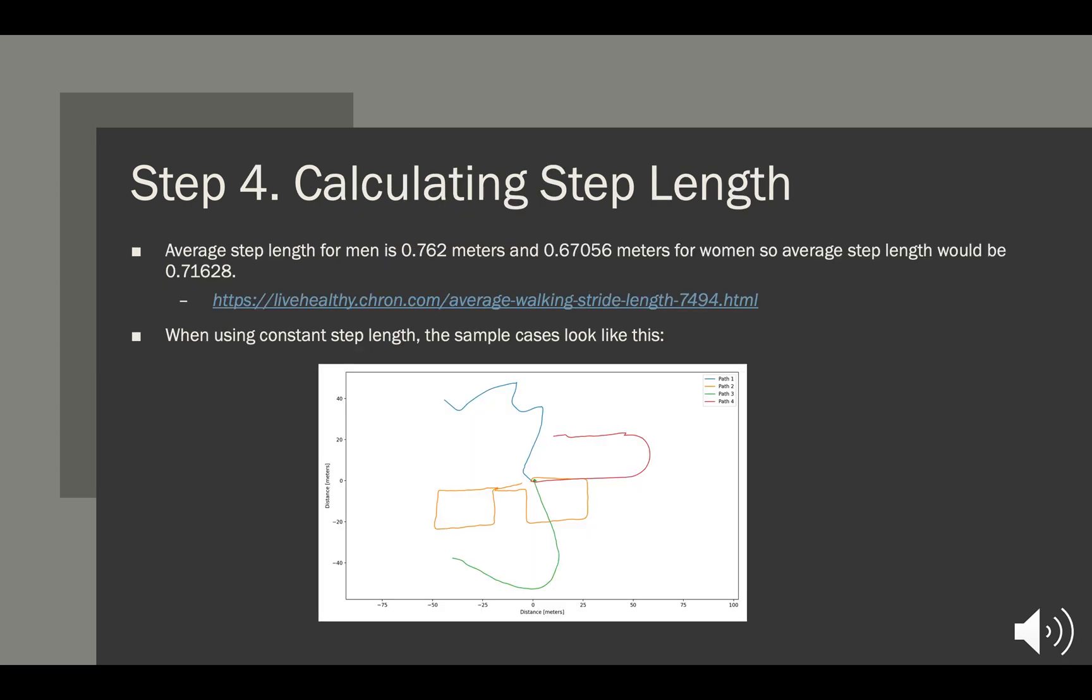The last step is calculating a step length. I tried a few different methods in order to find a dynamic step length, but none of them resulted in graphs better than just using a constant step length. So for the constant step length size, I just found the average step length for a human and used that. Thank you.